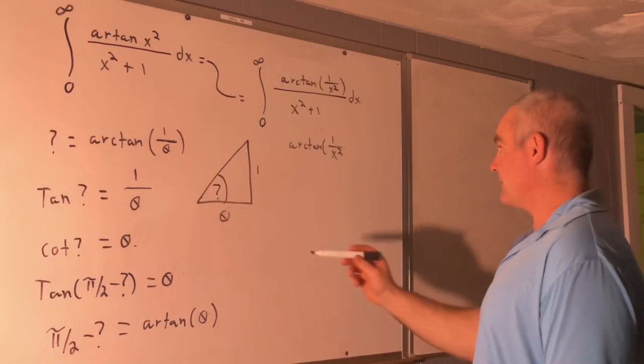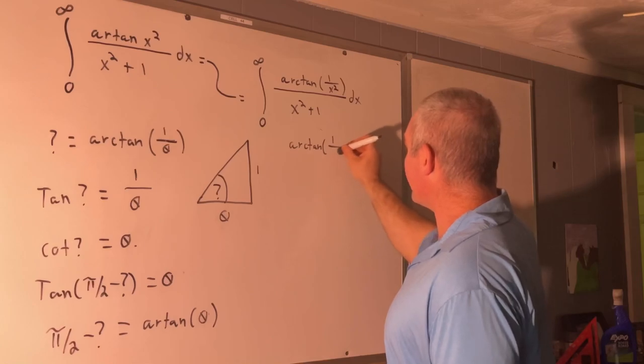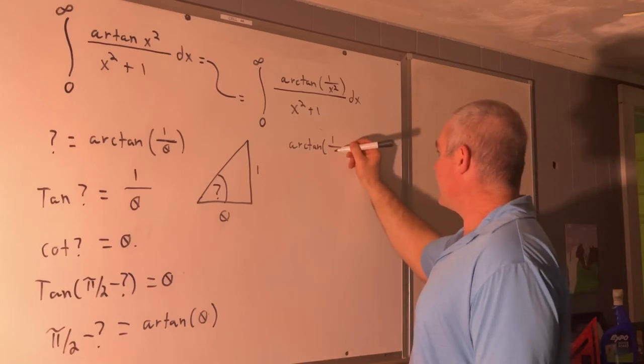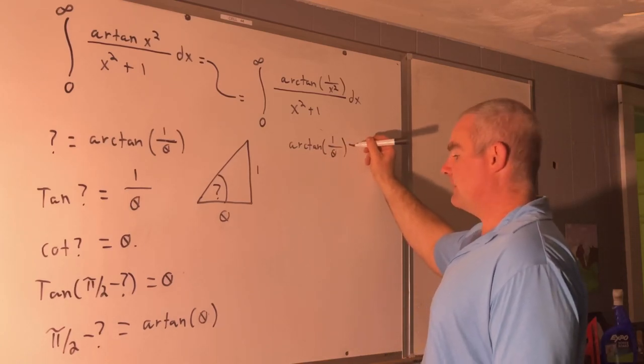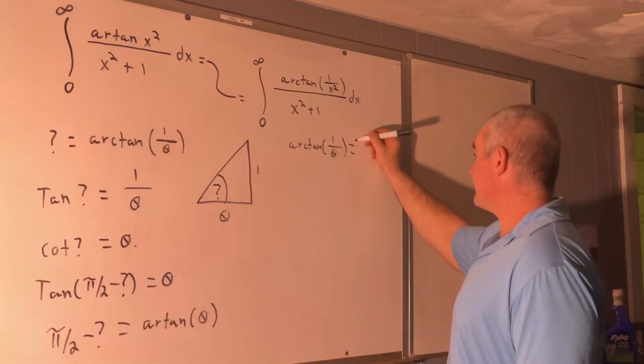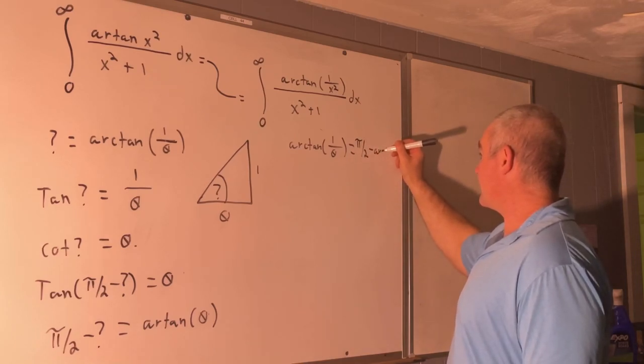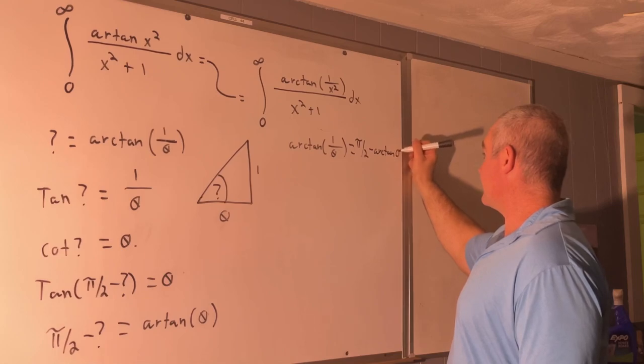Because I wanted to show the identity in general, not just for 1 over x squared. Alright, so did I get all of them? Yes, I did. So this means that the arc tangent of 1 over theta is equal to, well, that's going to be pi over 2 minus arc tangent theta.